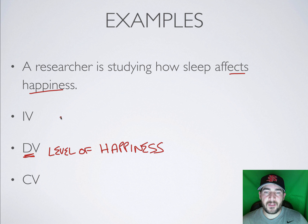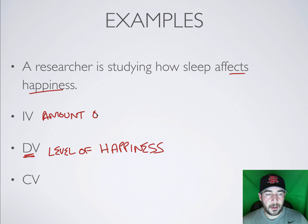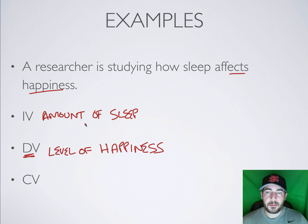Your independent variable would be what's going to cause your level of happiness — sleep. You're probably asking about the amount of sleep. This is a pretty vague question, so it might be quality of sleep or number of hours of sleep, but something to do with sleep is going to be your independent variable.